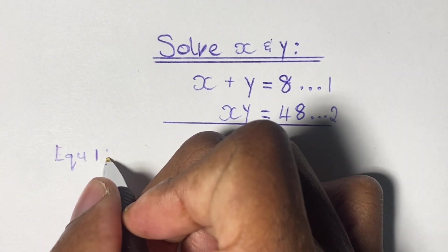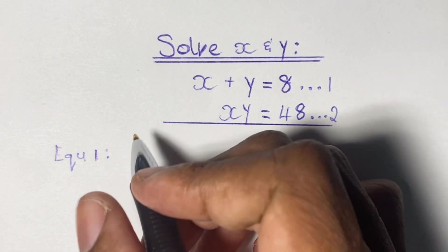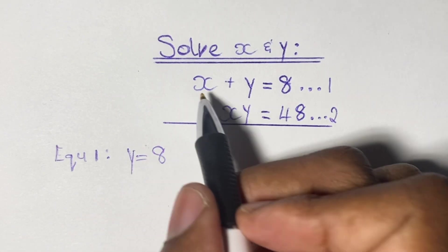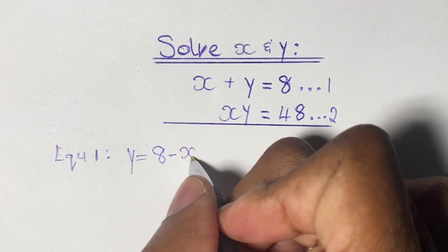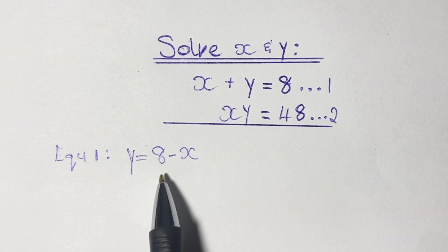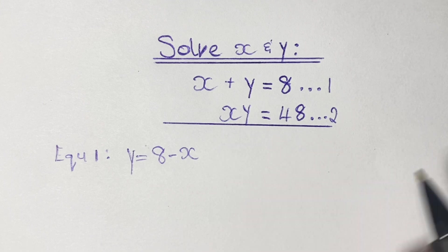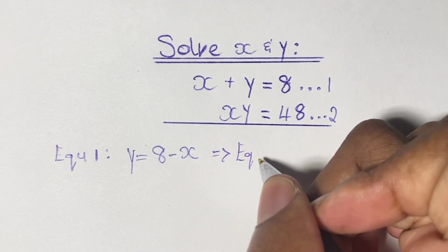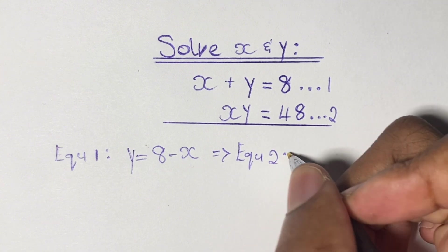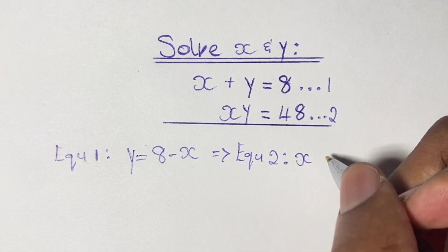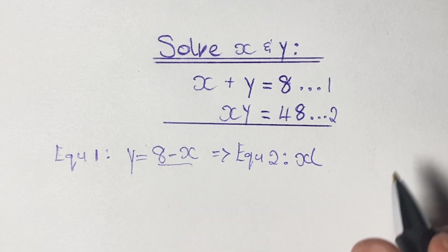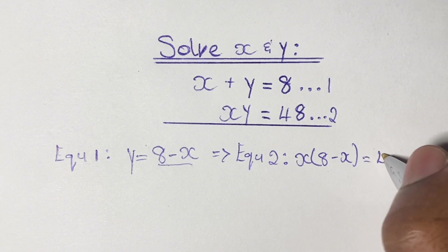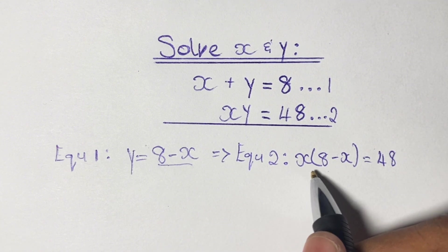We have equation 1 and equation 2. We are going to solve our pair of simultaneous equations by using what we call the substitution method. That means we are going to find a variable — in this case we choose y — and set y to be equal to 8 minus x, making y the subject of equation 1. Then we substitute that value of y into equation 2, so we have x times (8 minus x) is equal to 48.